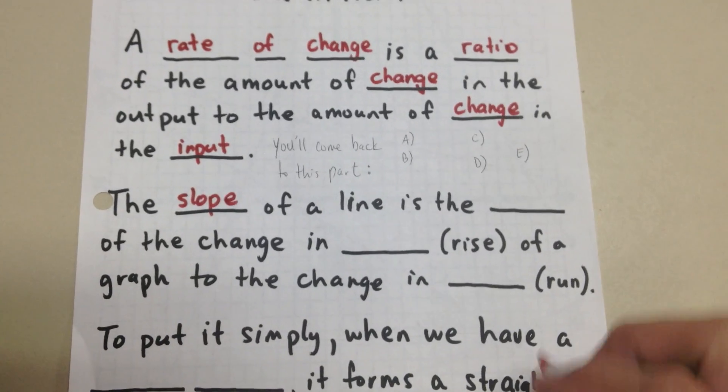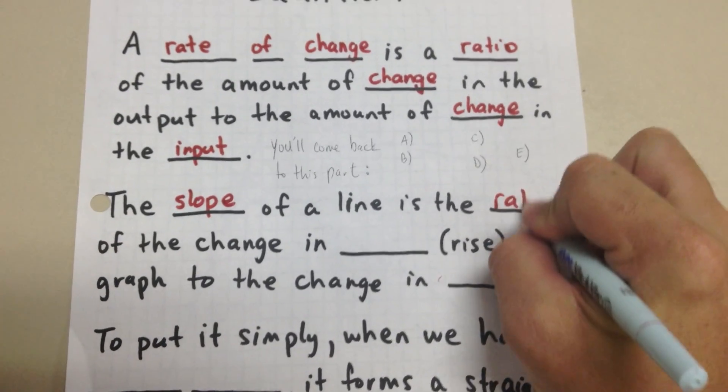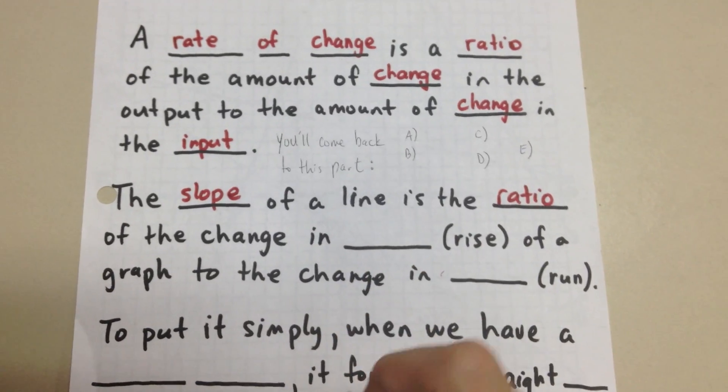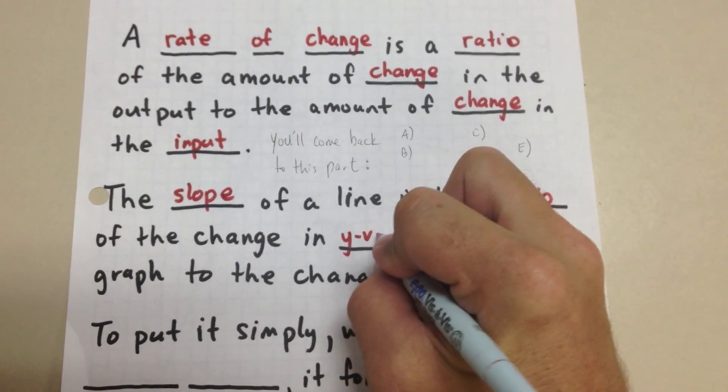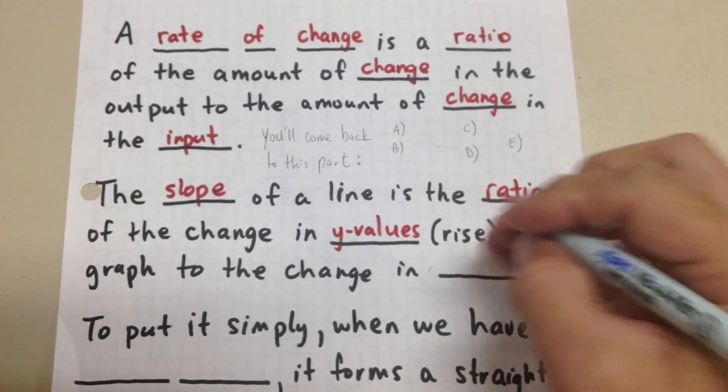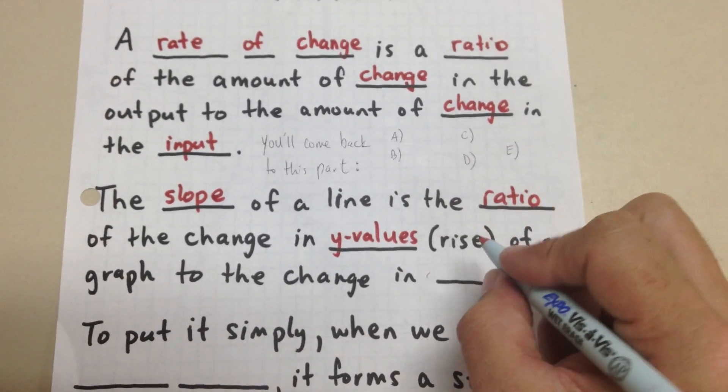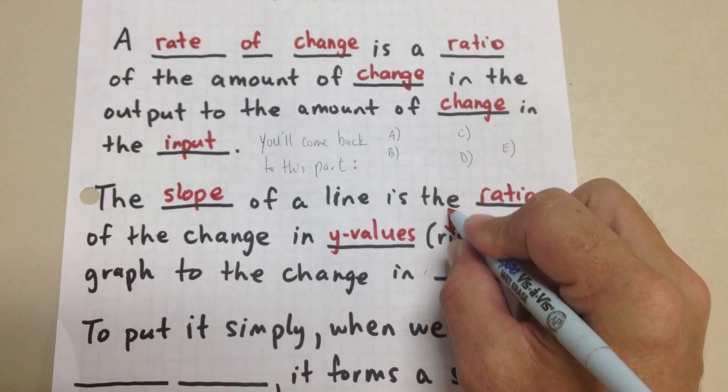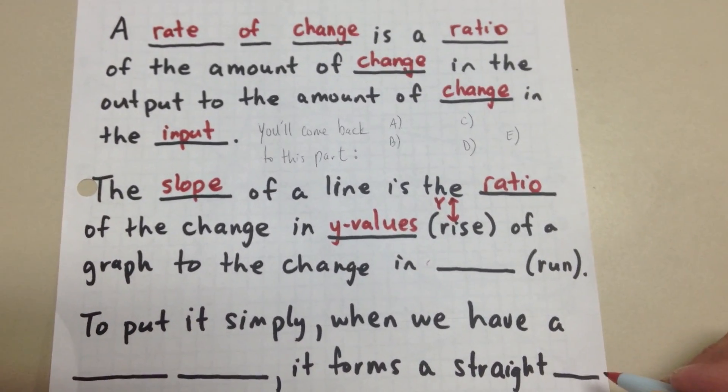So the slope of a line is the ratio of the change in the y-values. And we're going to call that the rise. And again, when you think about the y-values, we're talking about your y-axis here going up and down on your coordinate plane.